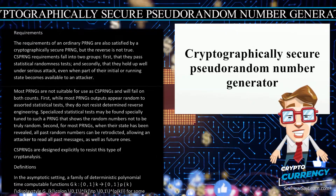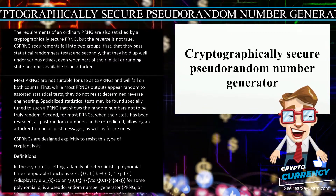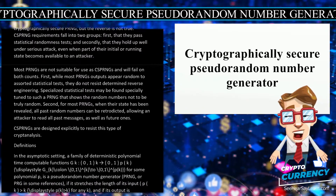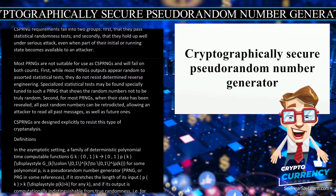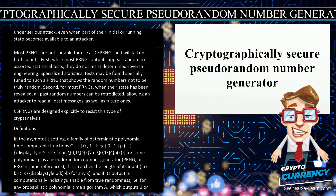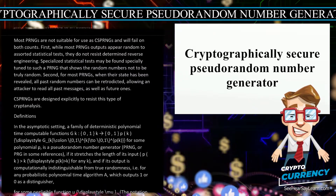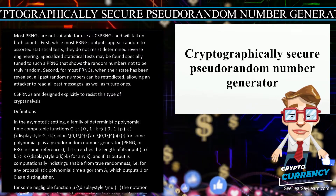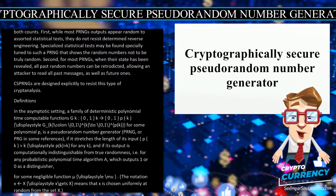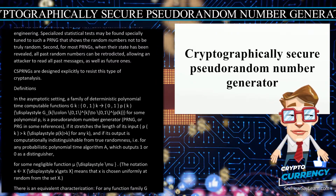In the asymptotic setting, a family of deterministic polynomial-time computable functions G_K: {0,1}^K → {0,1}^P(K) for some polynomial P is a pseudo-random number generator (PRNG) if it stretches the length of its input — P(K) > K for any K — and if its output is computationally indistinguishable from true randomness, i.e., for any probabilistic polynomial-time algorithm A which outputs 1 or 0 as a distinguisher, for some negligible function μ.